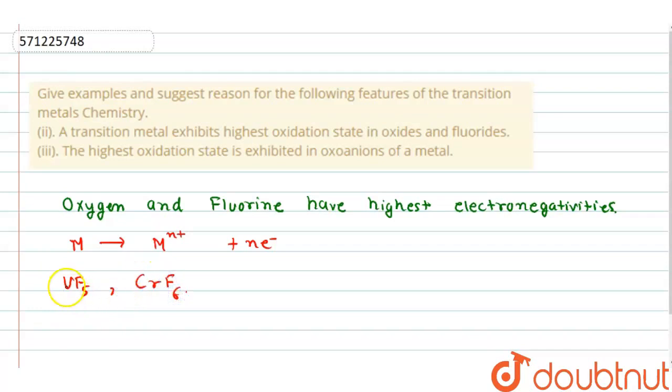But if we talk about VCl5 or VI5, they do not exist because fluorine is smaller, so it can stabilize higher oxidation states of transition metals. But Cl- cannot stabilize higher oxidation states because they are very large in size and not highly electronegative.